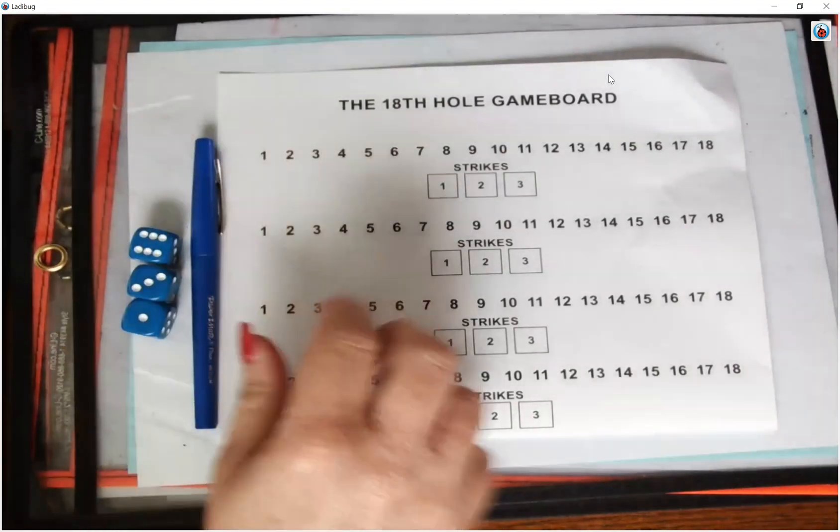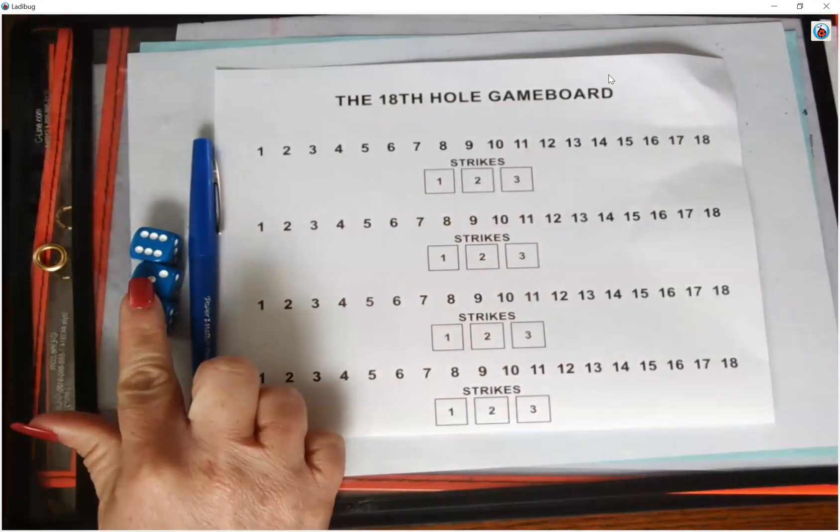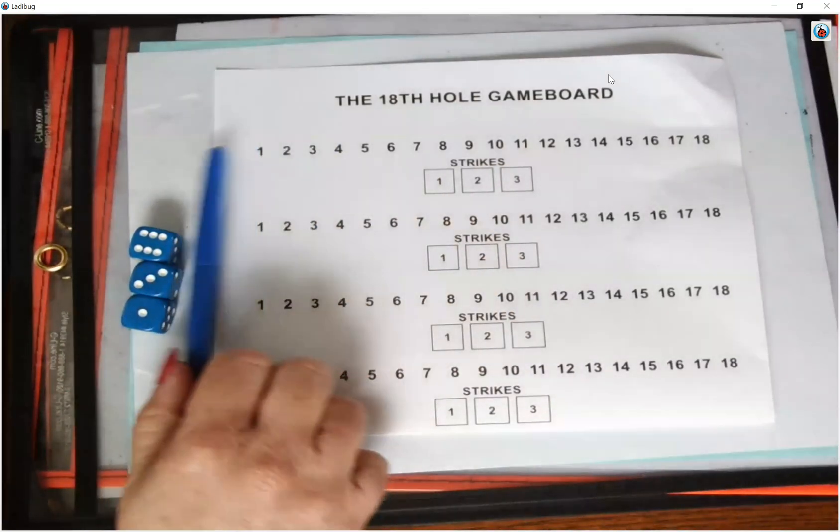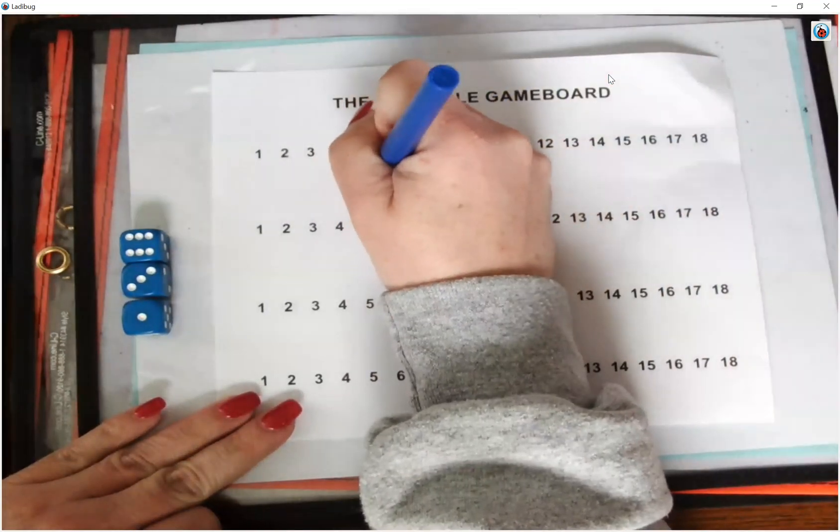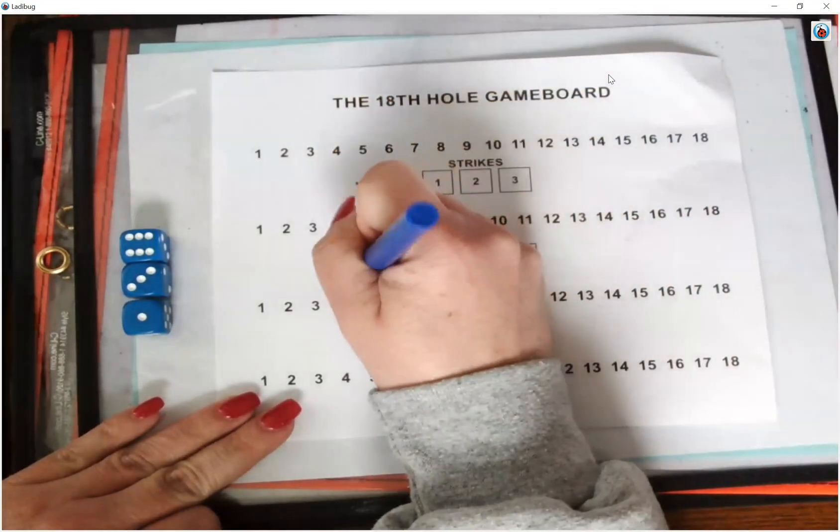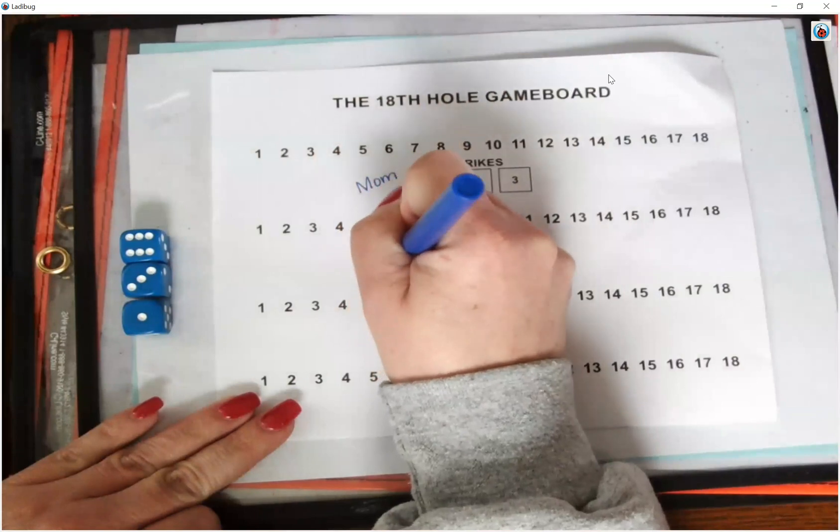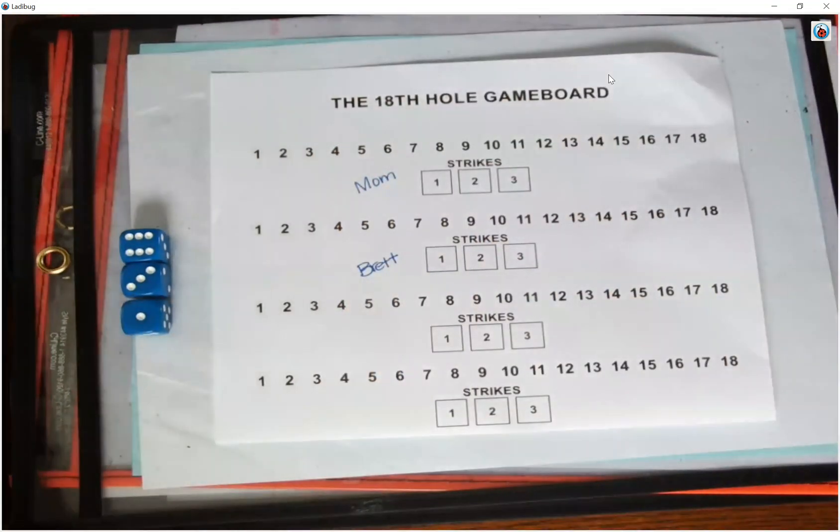So to play this game you're going to need the game board and you're going to need three dice and then some kind of a pen. So this first one up here I'm going to put mom because this one's going to be mine and on this one down here this is going to be Brett's game board so I'm going to put his name here.